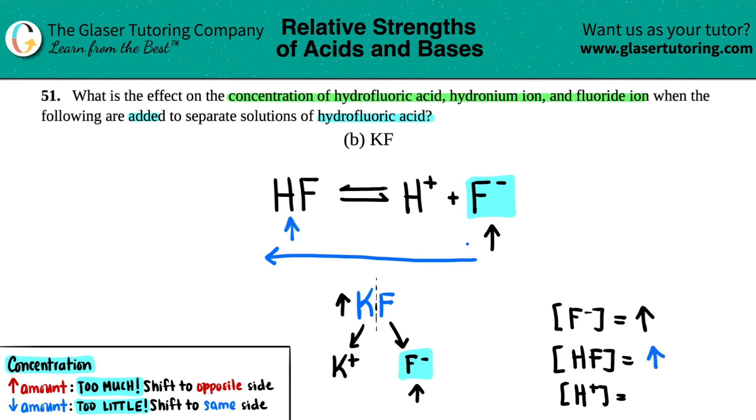Vice versa, if you're going away from something, right? It's starting on the products and you're going to the reactants, the H plus would drop. So that would have to decrease. And those are all your effects on the concentrations. And that's the answer for B.